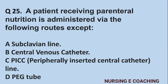Question number 25: A patient receiving parenteral nutrition is administered via which of the following routes, except: A) Subclavian line, B) Central venous catheter, C) PICC, D) Peripheral inserted central catheter line, E) PEG tube. Answer is D) PEG tube.